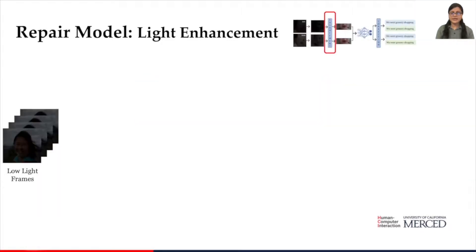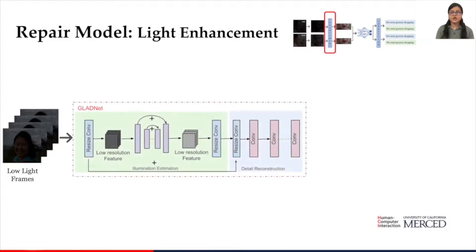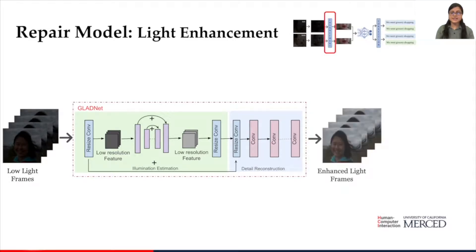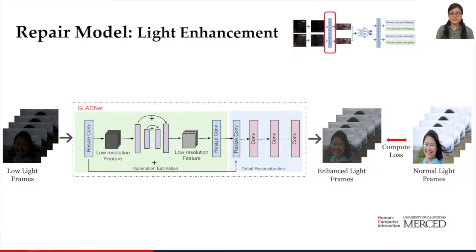For light enhancement, we augmented a low-light image enhancement network called GladNet by using the most appropriate loss function and layer optimization through multiple experiments. It takes a sequence of low-light images and outputs enhanced images. These enhanced images are compared with their corresponding normal light images to compute the loss, which is then backpropagated to fine-tune and optimize the model.